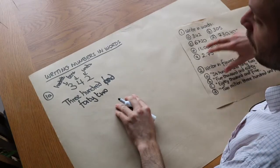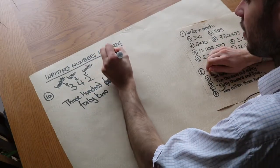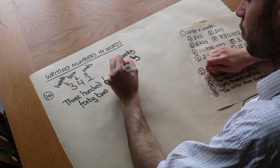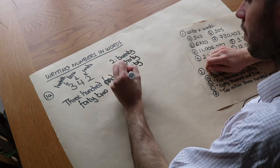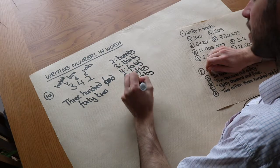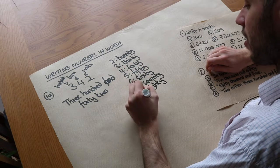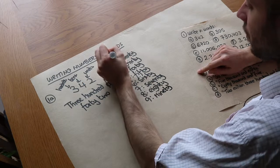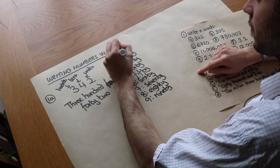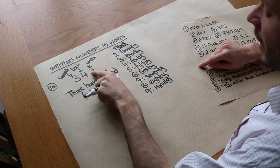The names for the different numbers of tens are: two is twenty, three is thirty, four is forty, five is fifty, six is sixty, seven is seventy, eight is eighty, and nine is ninety. So this is for the tens digit. Since we have four tens, it's forty, and we have two units, so it's forty-two.